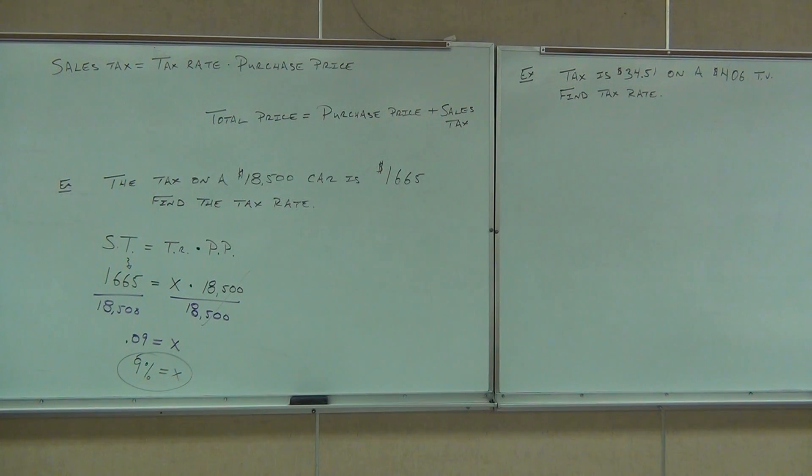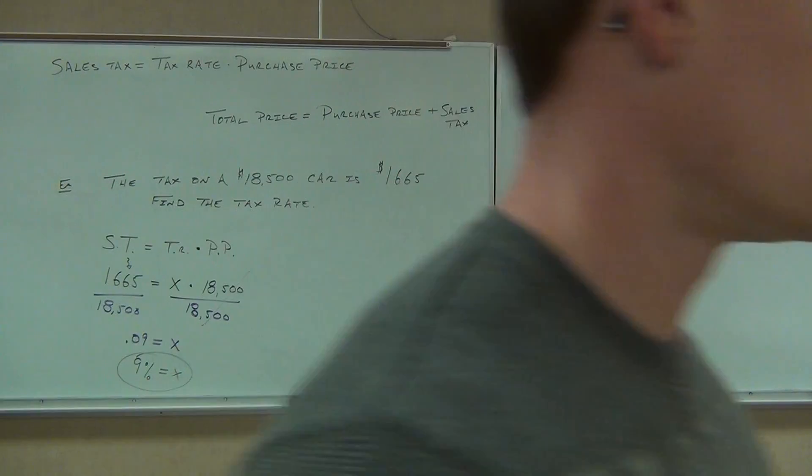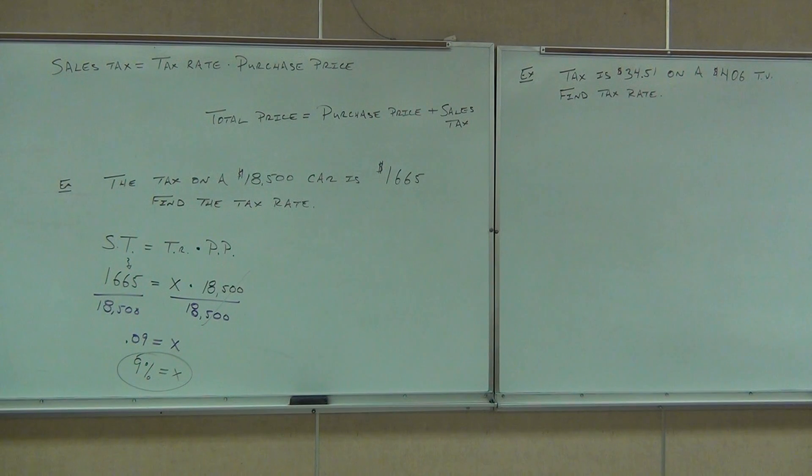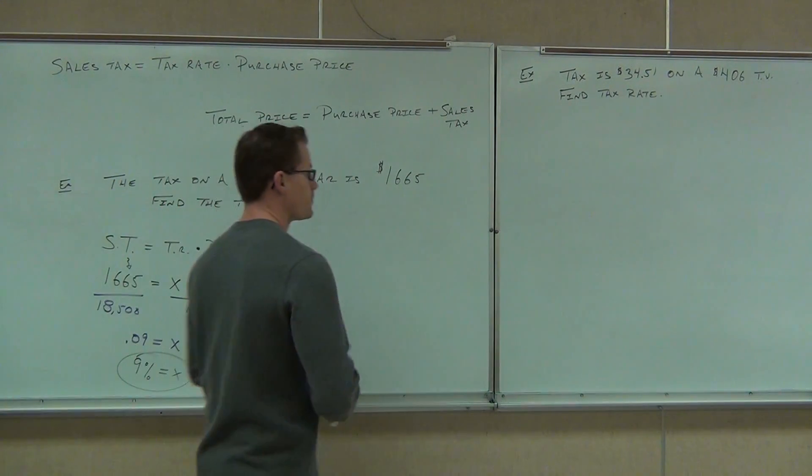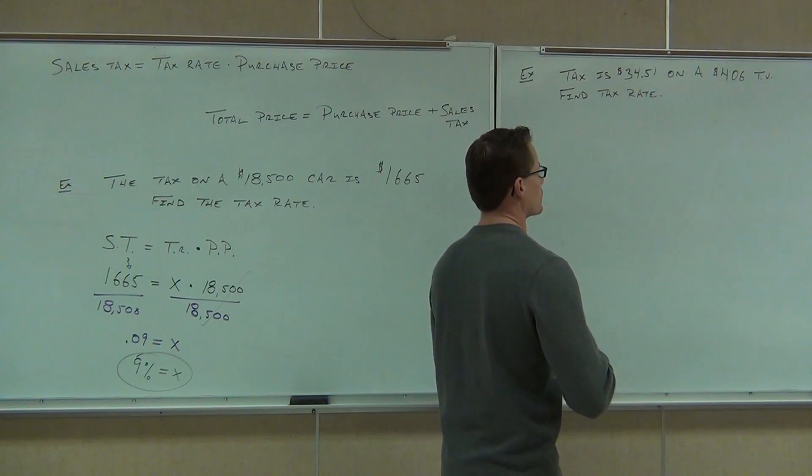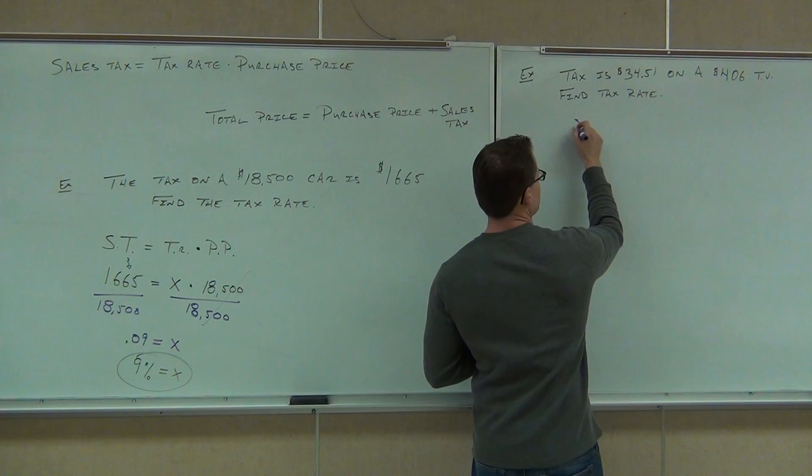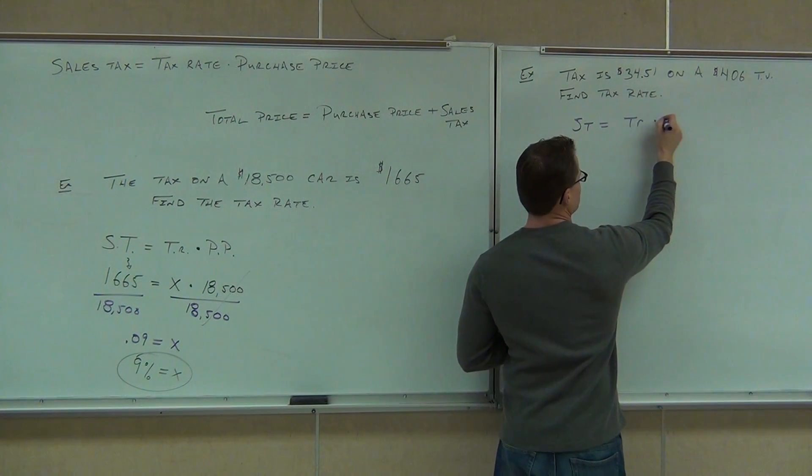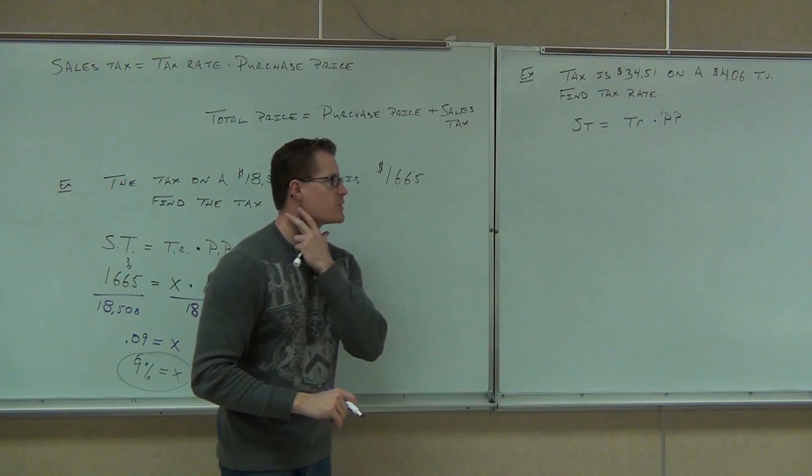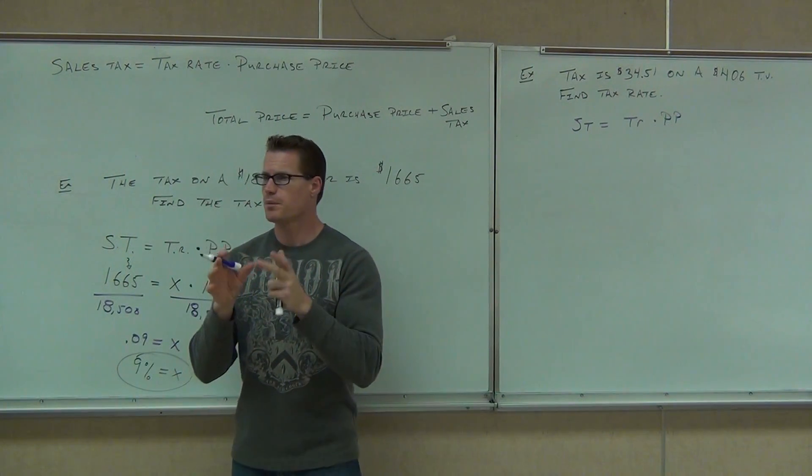So we're still using that first equation up on the board. Sales tax equals tax rate times purchase price. Only this time you're looking for something different. You're looking for the tax rate. Sales tax equals tax rate times purchase price. All you need to do is identify what parts are which numbers.